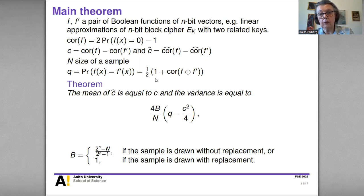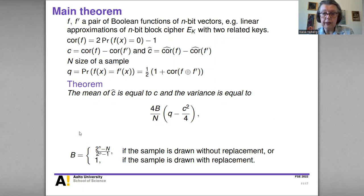Q is the probability that the two Boolean functions F and F' are equal, which we can write as one-half times one plus the correlation between F and F'. The mean of the sampled correlation difference equals C, and the variance equals 4B divided by N, times Q minus C squared divided by 4, where B is the finite population correction coefficient with expression (2^N minus N) divided by (2^N minus 1) if the sample is drawn without replacement, and 1 if drawn with replacement.